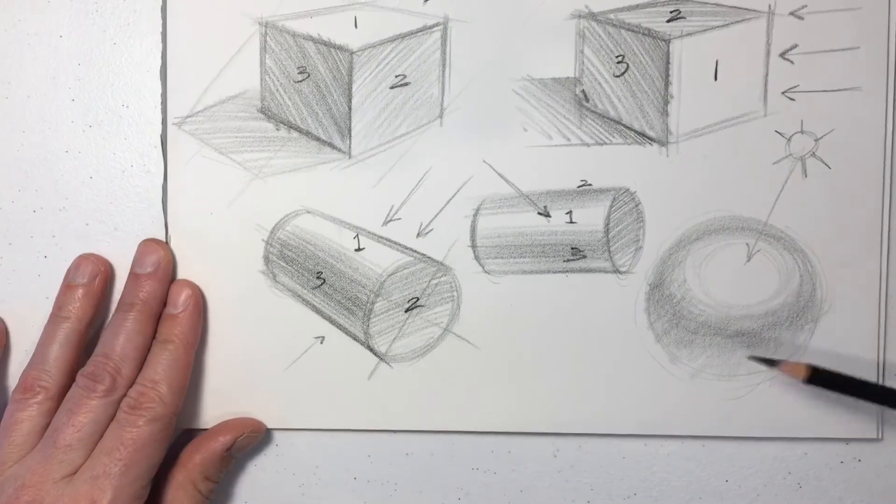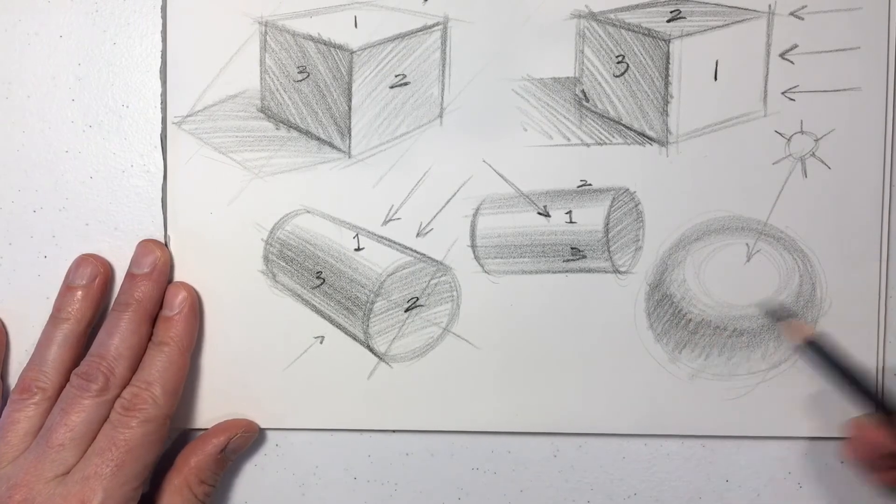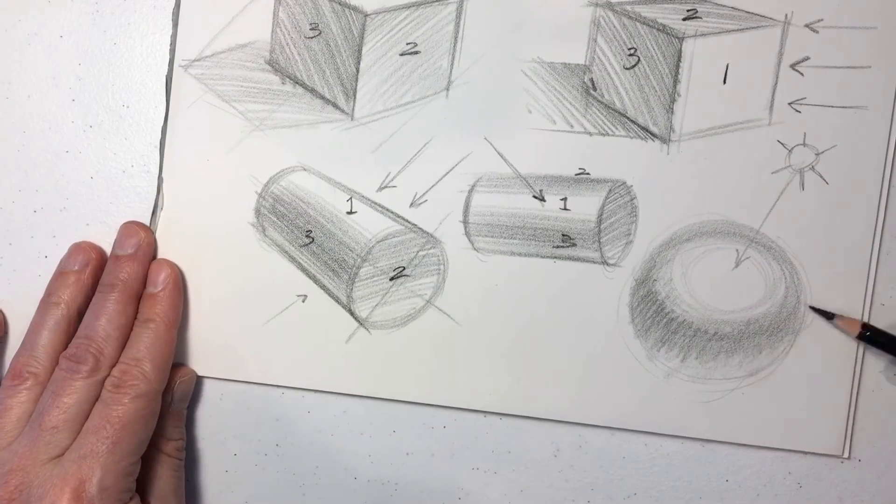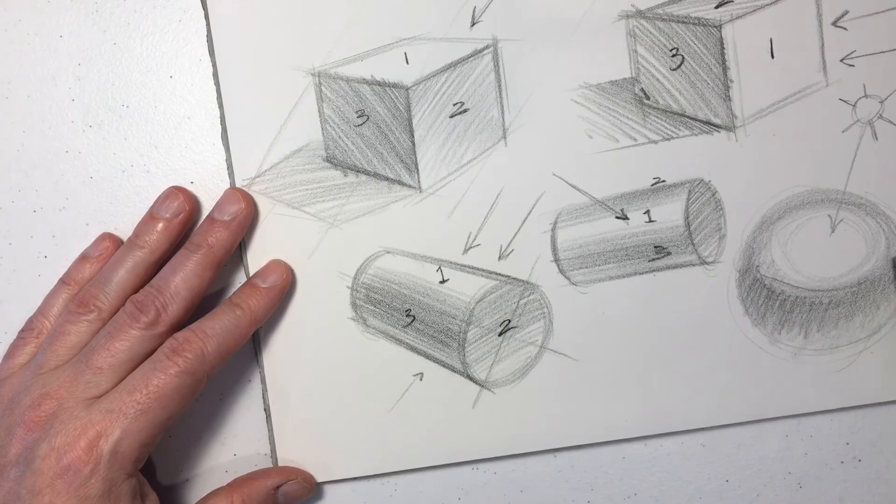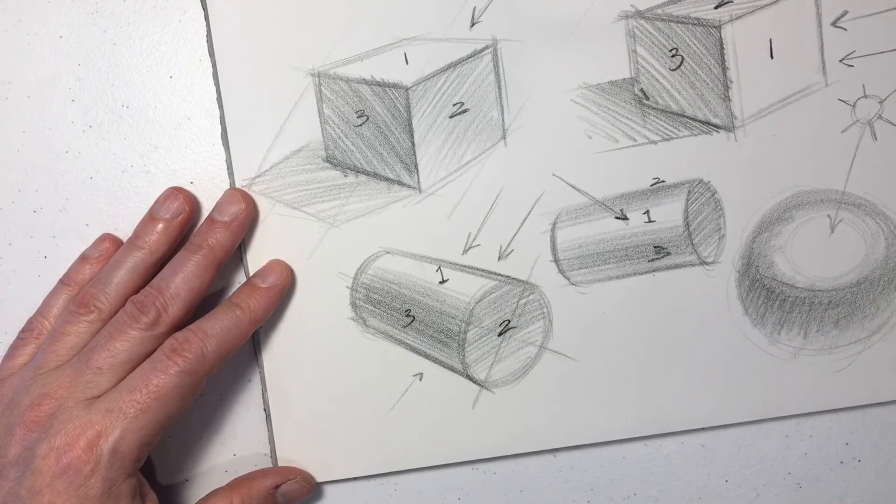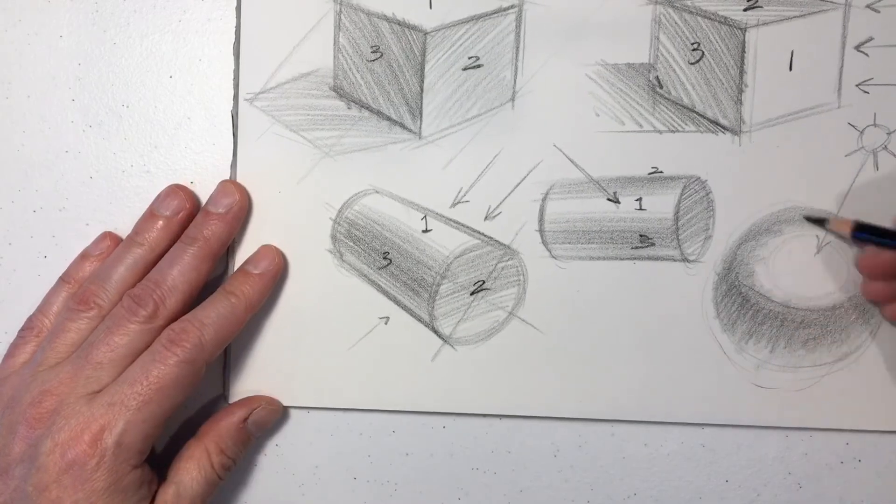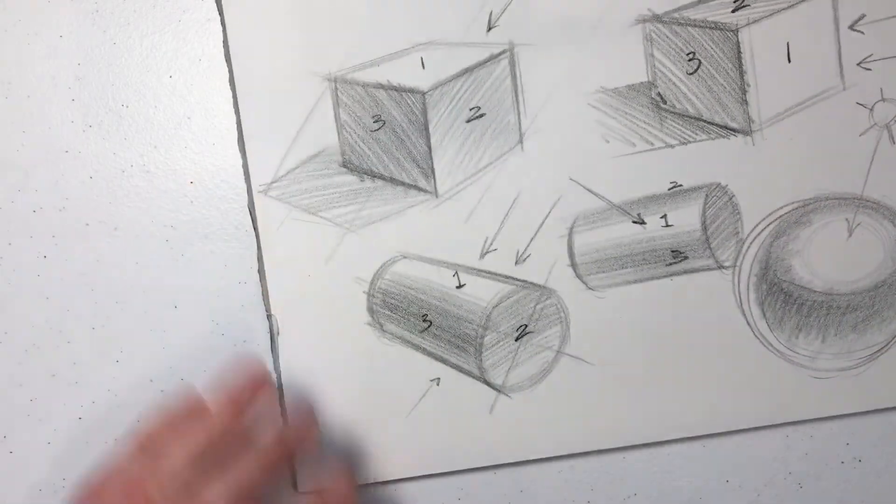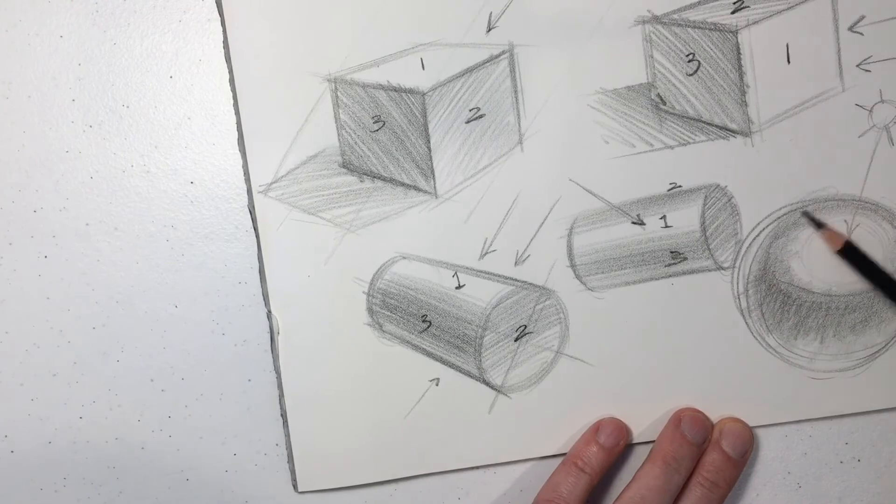We're going to slowly build up the shading, because we want to maintain those soft transitions that a sphere has. And slowly clean up our drawing.